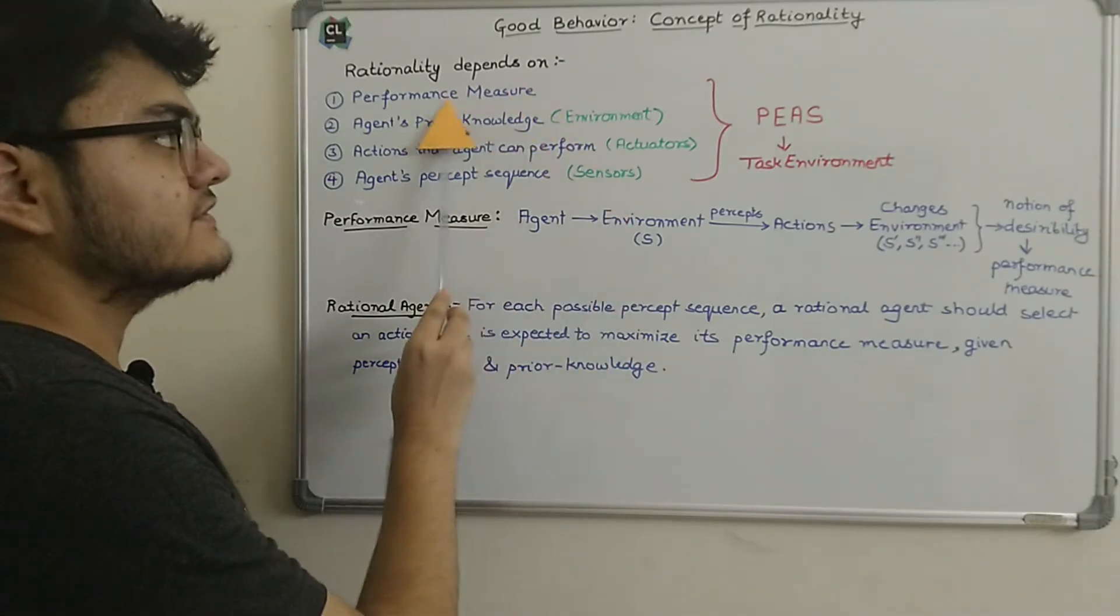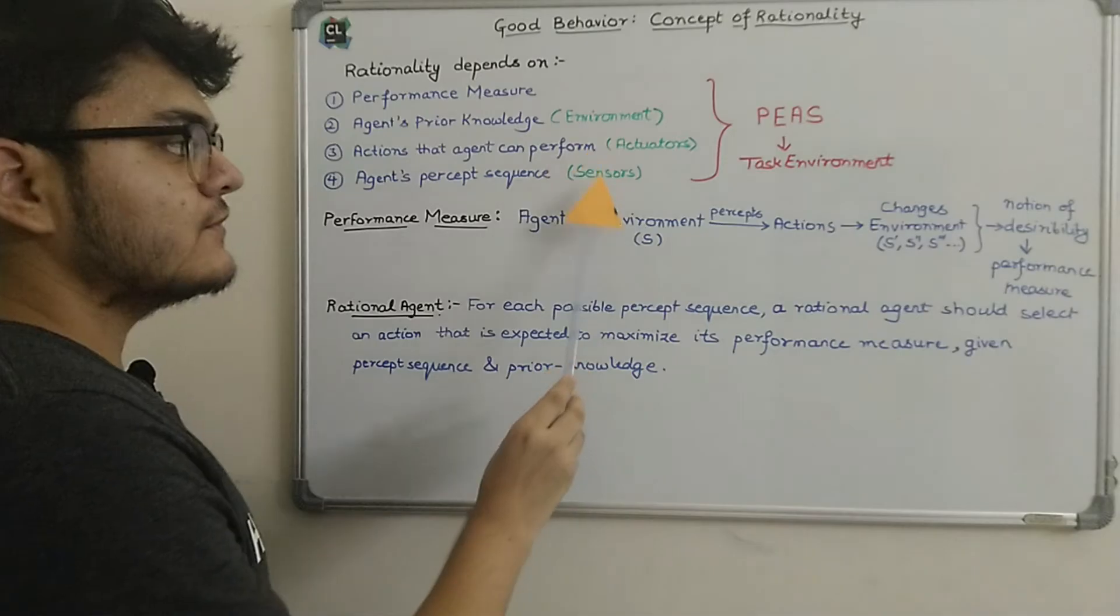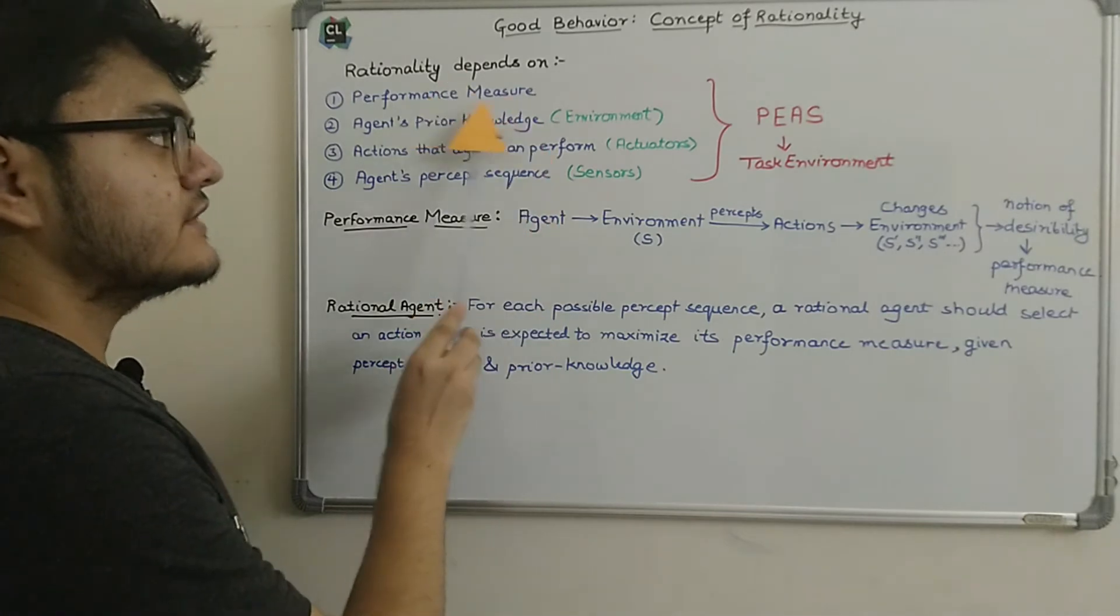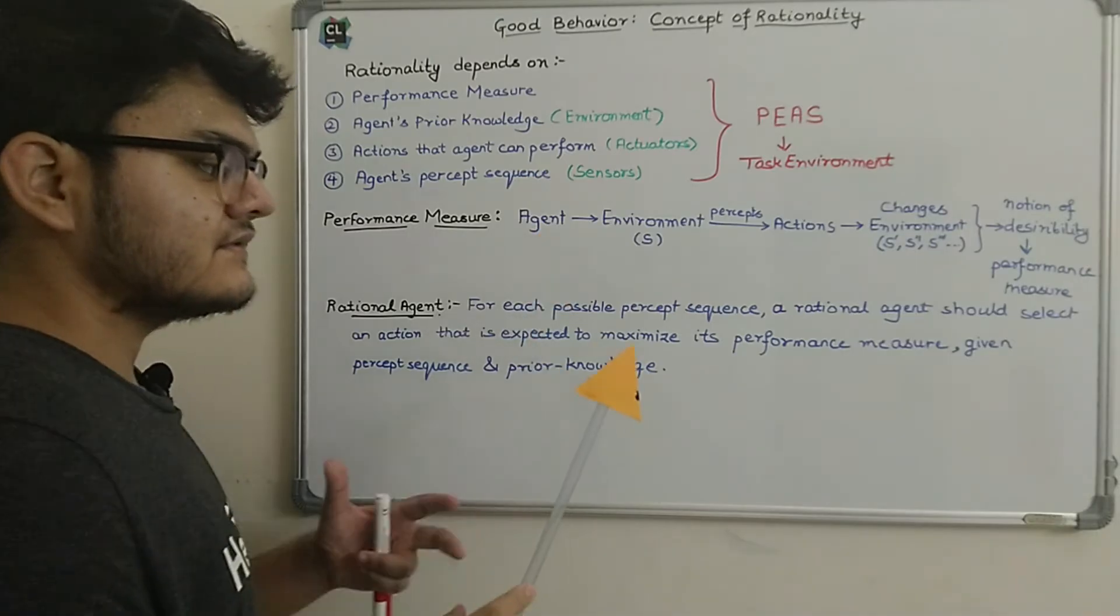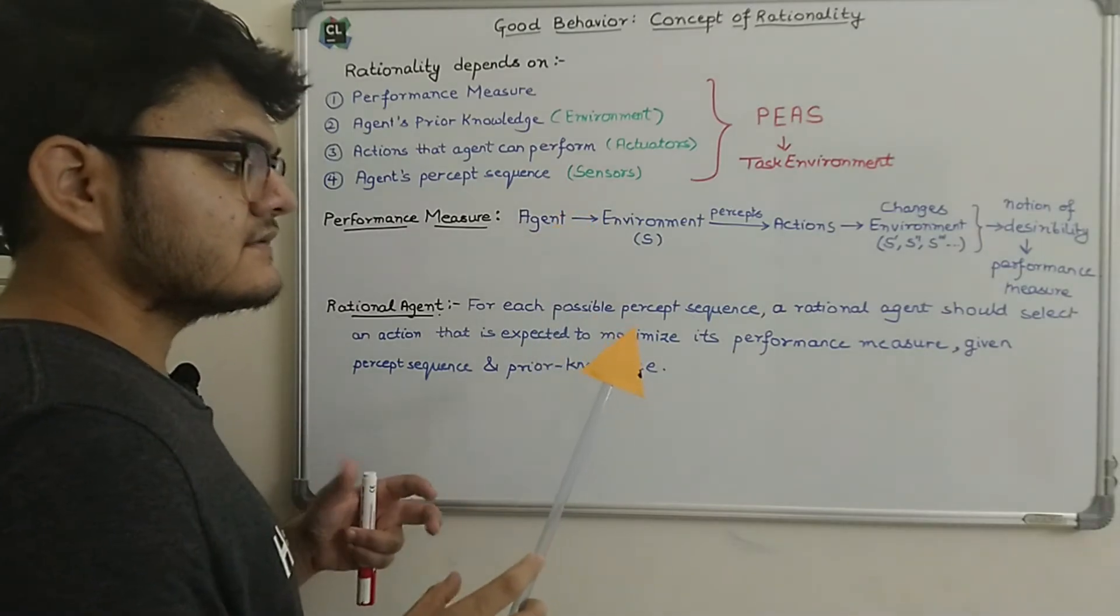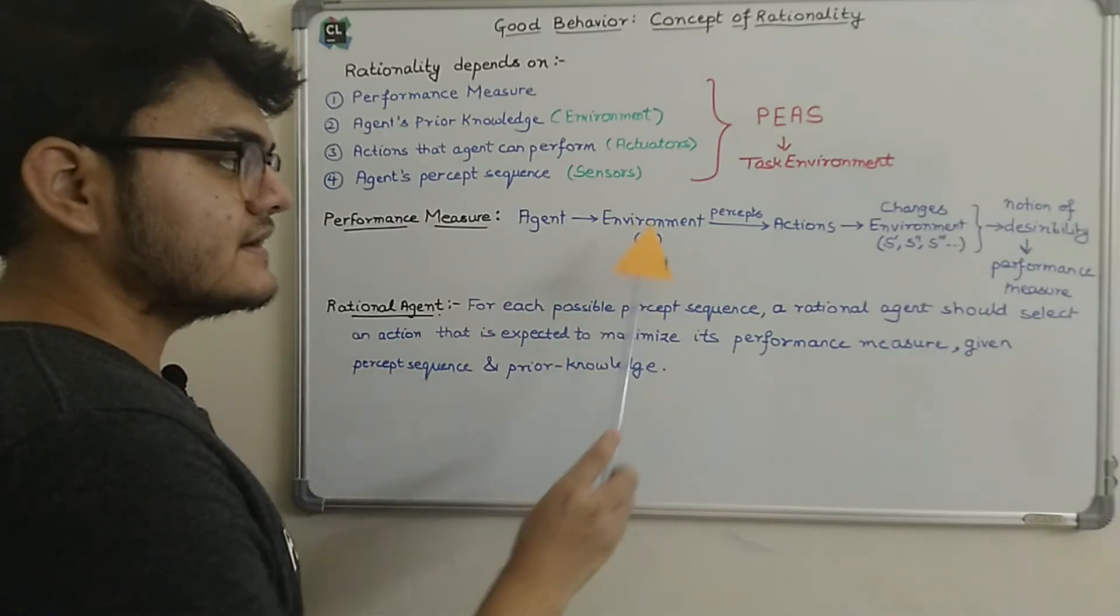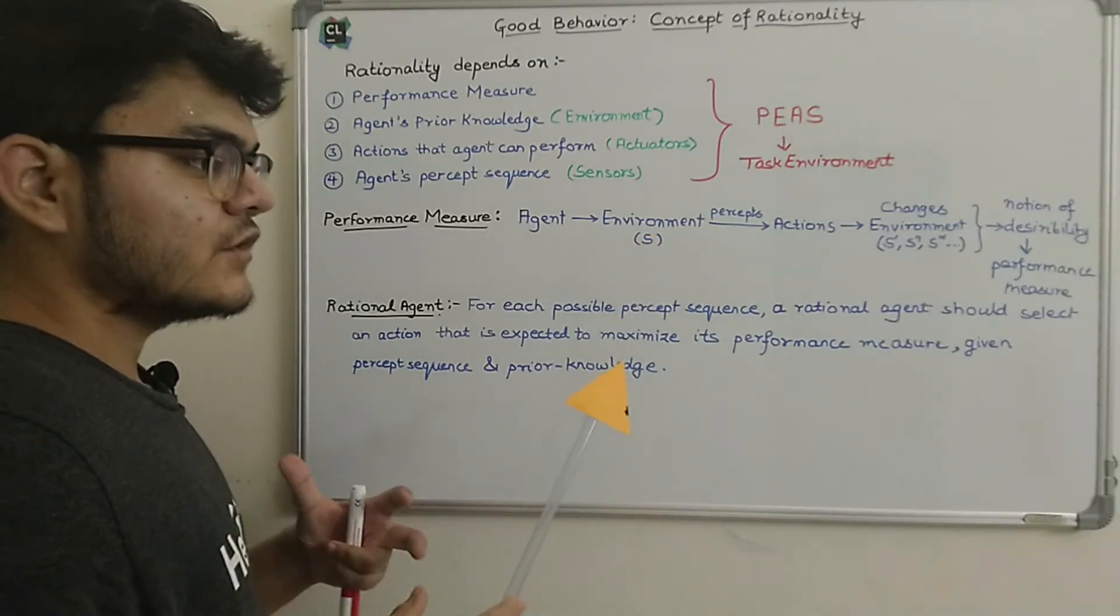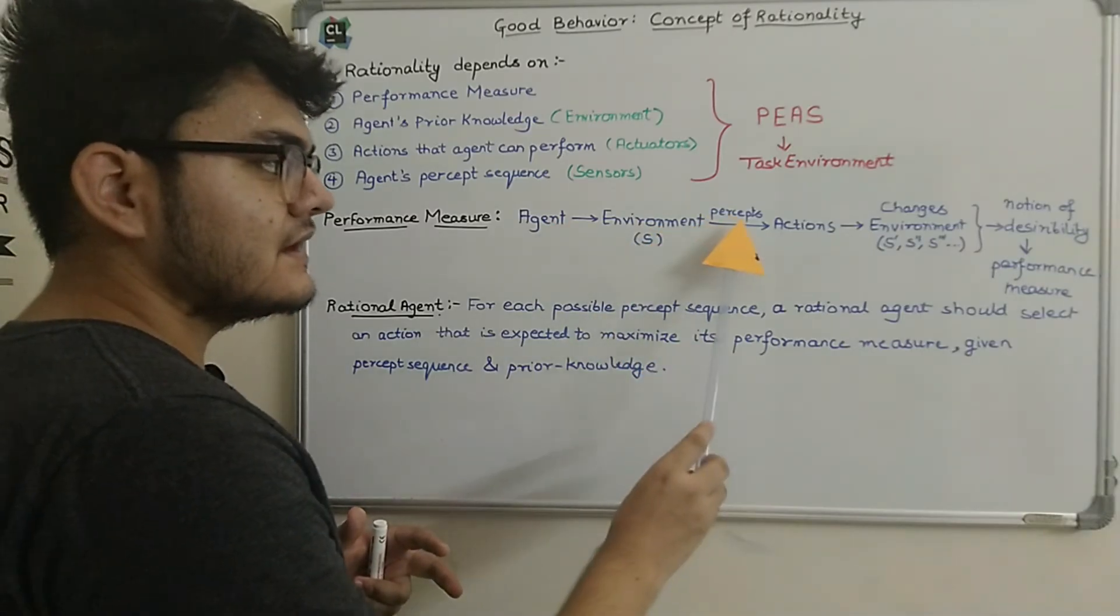Now let's discuss the first one, which is the performance measure. So we can basically say that if an agent follows these four rules, we can say that it is a rational agent. So let's discuss what is performance measure. Let's suppose we have some AI agent—let's take an example of a self-driving car. Now agent in here can be a program or a software that can actually perceive the environment. Now let's say the environment has some state S.